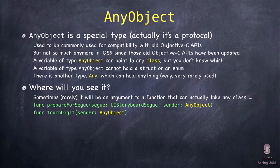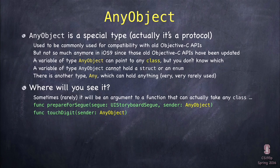Another example is touchDigit. When we control-dragged, remember we changed it from AnyObject to UIButton. If we hadn't done that, it would have created touchDigit with sender as AnyObject, and then touchDigit could have been sent by a UIButton or maybe by a UISlider. We didn't do that because inside touchDigit we wanted sender to be a UIButton so we could send it currentTitle and other button things.